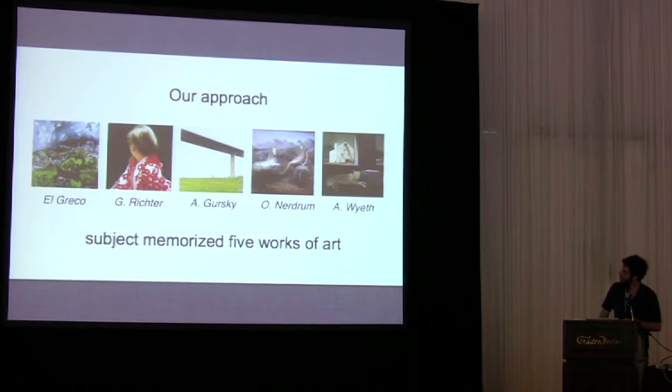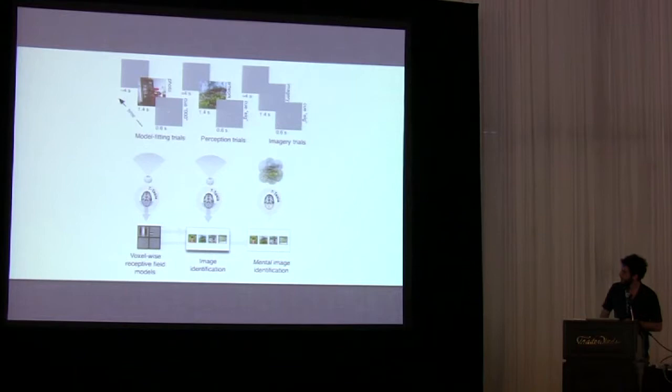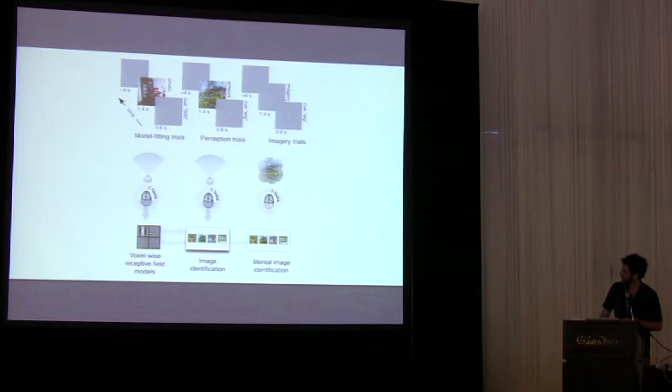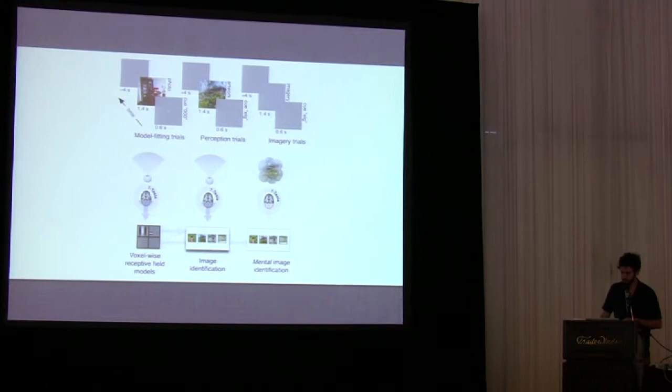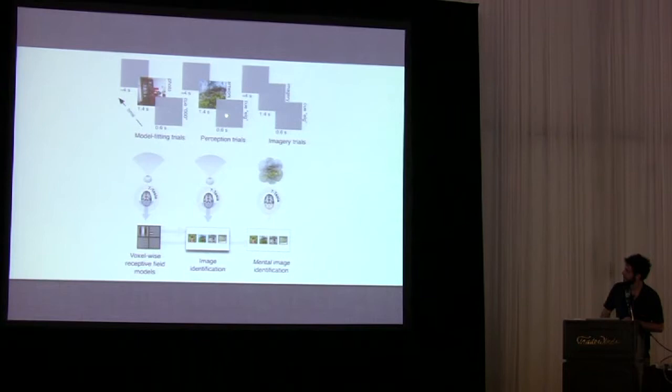Our approach was to ask subjects to memorize five works of art. We then put those subjects in a scanner and scanned at seven Tesla at the Center for Magnetic Resonance Research at the University of Minnesota, scanning roughly the back third of the subjects' brains. During a set of model fitting runs, we asked them to fixate on a point at the center of the screen while passively observing roughly 1,500 randomly selected color photographs. Then they sat through a set of perception and imagery runs.